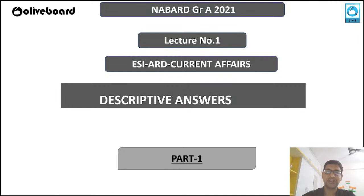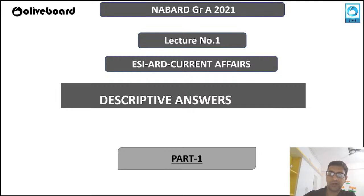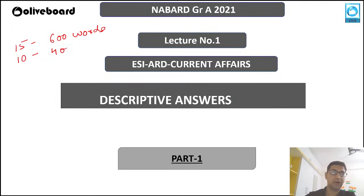This is lecture one on ESI ARD descriptive answers. We have come out with a series — this is part one. In the NABARD Grade A final phase two examination, there is a descriptive question of ESI ARD of 15 marks and 10 marks, with a word limit of 600 words and 400 words respectively.